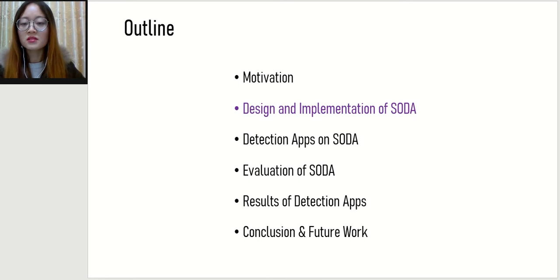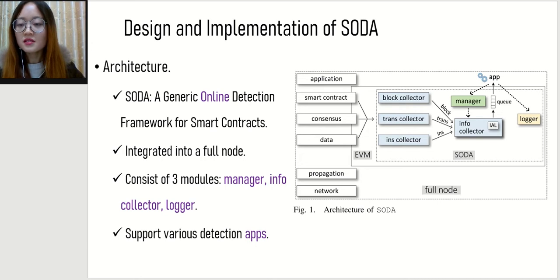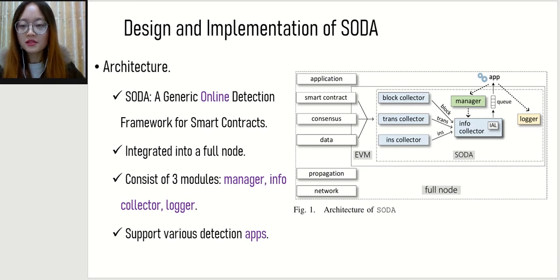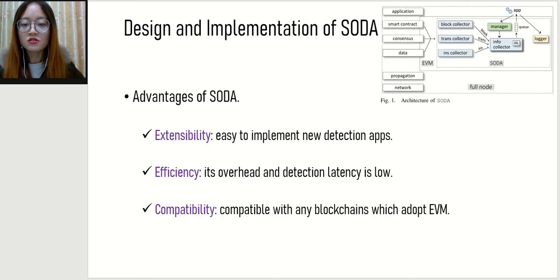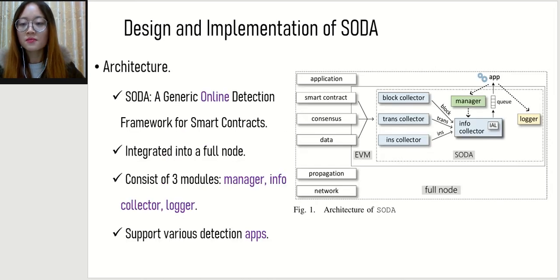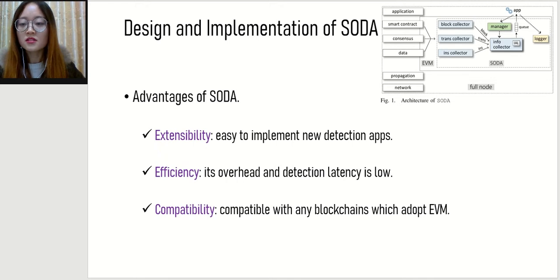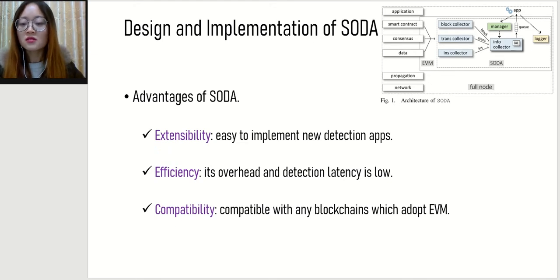I'd like to describe the design and implementation of our framework, SODA. This figure illustrates the architecture of SODA, a generic online detection framework for smart contracts. It should be integrated into a full node of a blockchain. SODA consists of three main modules: Manager, Info Connector, and Logger. SODA has three advantages: first, it is extensible to implement new detection apps; second, it is efficient with no overhead and no detection latency; third, SODA is compatible with any blockchains that adopt EVM.